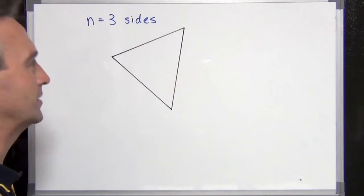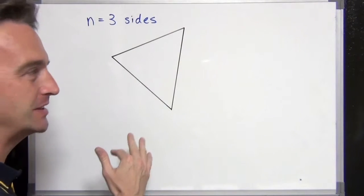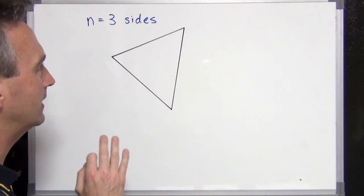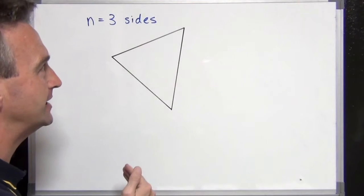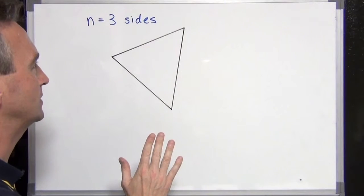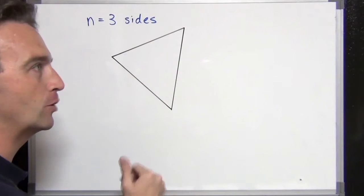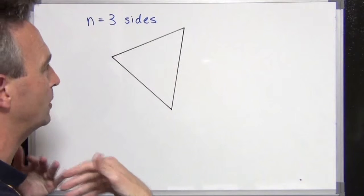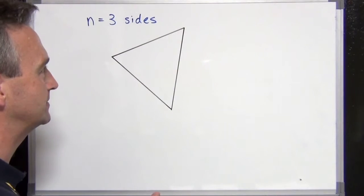So to start off, what is a triangle? A triangle is a three-sided polygon. What is a polygon? A polygon is a flat two-dimensional object with straight sides and is a closed figure that can be drawn on a flat surface like a whiteboard, piece of paper, or blackboard. If it's a closed figure with straight sides, it is a polygon. And a triangle is a polygon with three sides.